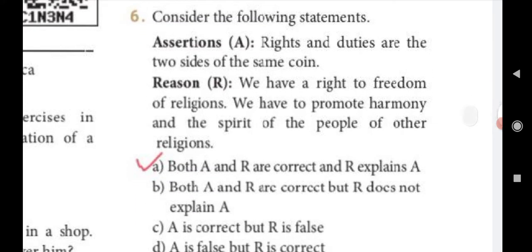Six: Consider the following statement. Assertion A — Rights and duties are the two sides of the same coin. Reason R — We have a right to freedom of religion; we have to promote harmony and the spirit of people of other religions. Answer A: Both A and R are correct, and R explains A.